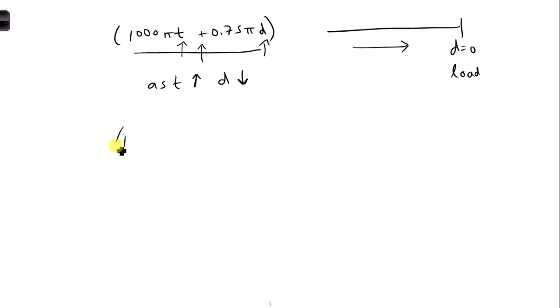Conversely, when we have the argument 1000πt minus 0.75πd, this is a traveling wave. We can see it has the same form. The only difference is that there's a minus sign here. As time goes up, in order to get a constant argument here, d must also go up, which means we're moving in the opposite direction towards the generator.